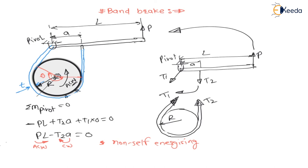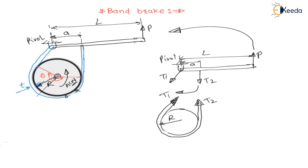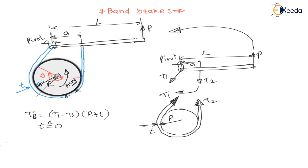For both clockwise and anti-clockwise rotation, the band brake is non-self-energizing. The braking torque TB, considering band thickness t, is T1 minus T2 times (R plus t). If the thickness of the band is approximately equal to zero — that is, if the band thickness is very small — then the braking torque equals T1 minus T2 times R. Thank you, my dear students. In the next lecture, we will see the pressure distribution between the band and brake drum.